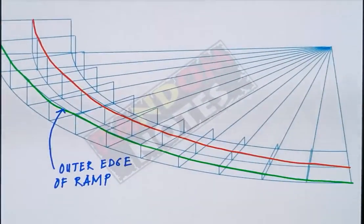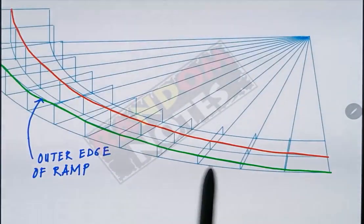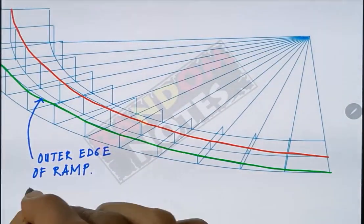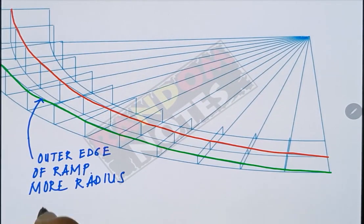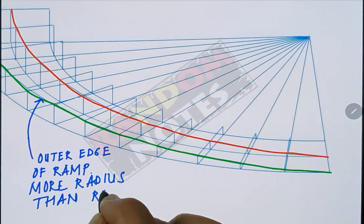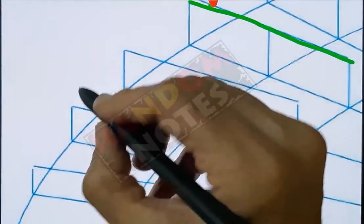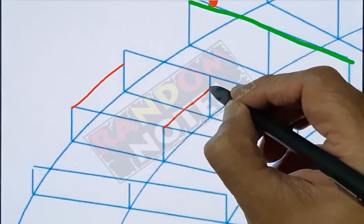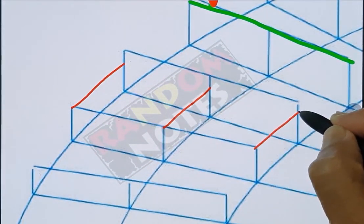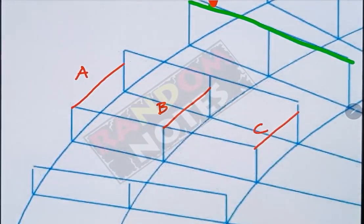This green line is the slope of the outer edge or the edge of the ramp with bigger radius. Let us understand the difference in slope at the outer edge, the center and the inner edge.